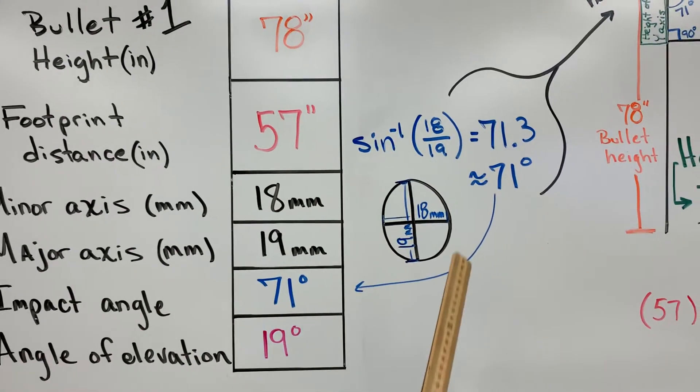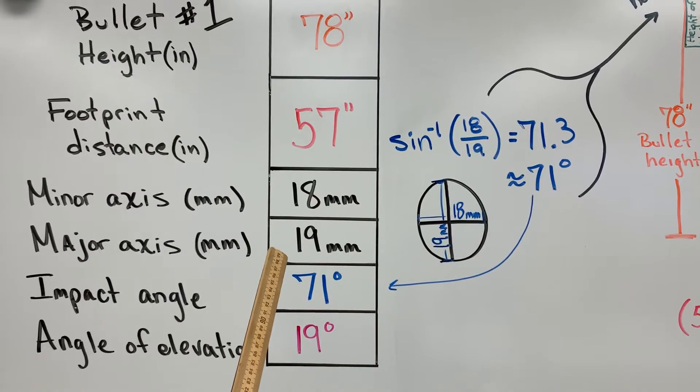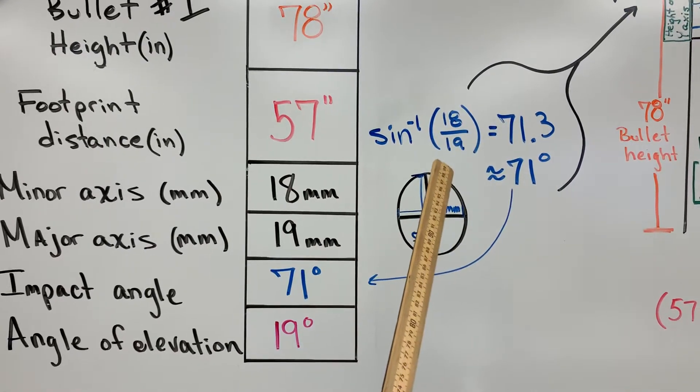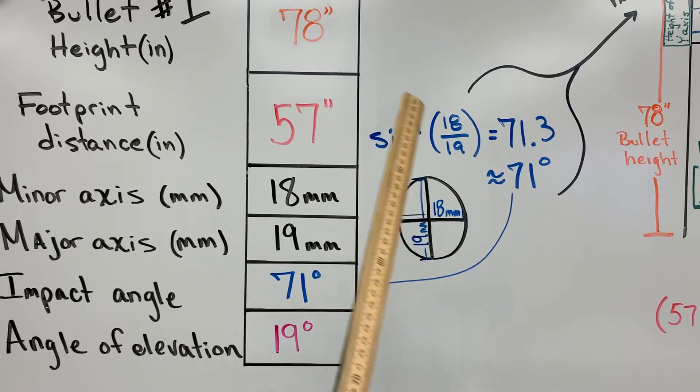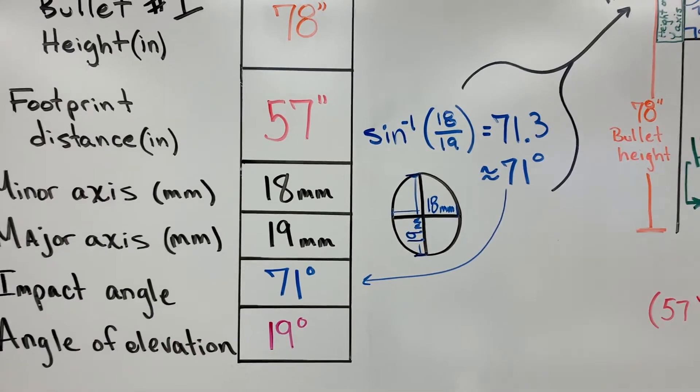You took some time to look at the hole and you divided the minor axis by the major axis, and you took those two numbers after dividing them and you took the inverse sine to get an angle, and that angle came out to 71 degrees.